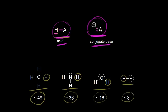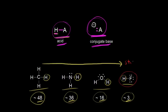We know that the lower the pKa value, the stronger the acid. So as we move to the right, we see a decrease in pKa values from 48 to 36 to 16 to 3. Therefore, as we go to the right, we see an increase in acid strength. So HF is the strongest acid out of these four, and therefore HF must have the most stable conjugate base.